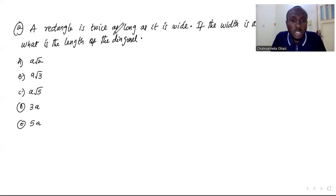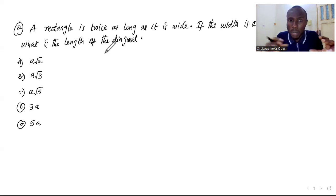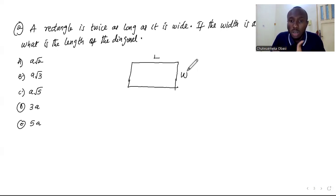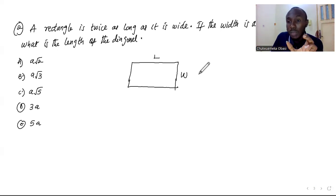The next question says: a rectangle is twice as long as it is wide. This is a word problem — let me draw a rectangle so we can see clearly. A rectangle has a length and a width. The length is how long the shape is and the width is how wide it is. They're telling us the length is double the width. So if the width is 5 centimeters, the length will be 10 centimeters.